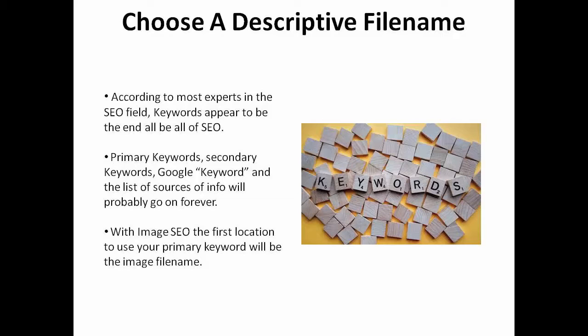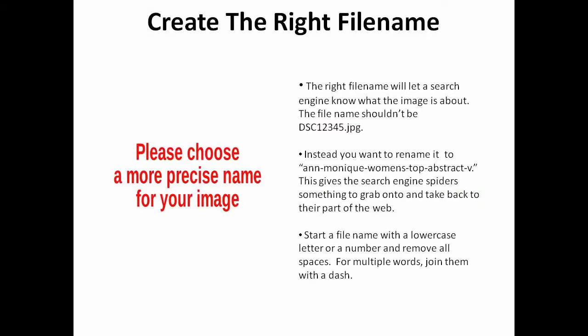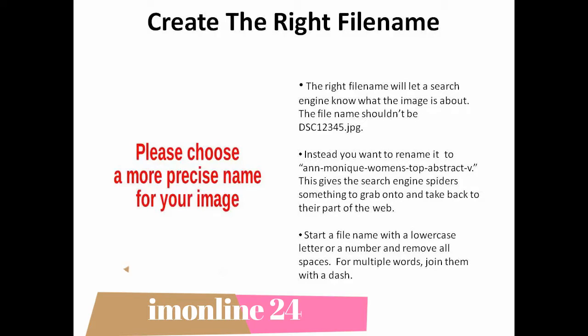With image SEO, the first location to use your primary keyword will be the image file name. The right file name will let a search engine know what the image is about. This means if your image is a woman's top in a specific abstract design, the file name shouldn't be dsc12345.jpg. Instead, you want to rename it something like monique-womens-top-abstract-v. Start a file name with a lowercase letter or a number, remove all spaces, and for multiple words, join them with a dash.